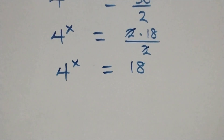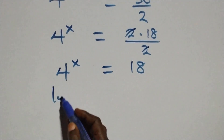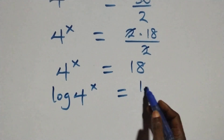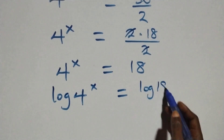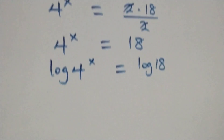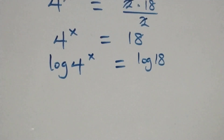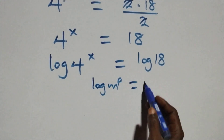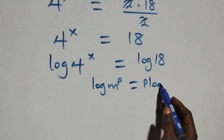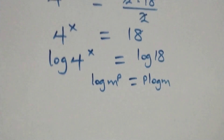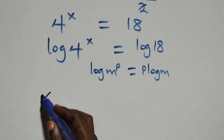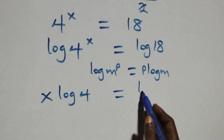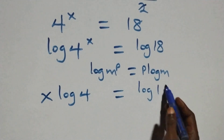The next step here, we take the log on both sides and we have log of 4 raised to power x equals log 18. We apply the power rule of logarithms: when we have log m raised to power p, this is the same thing as p·log m. This becomes x·log 4 equals log 18.